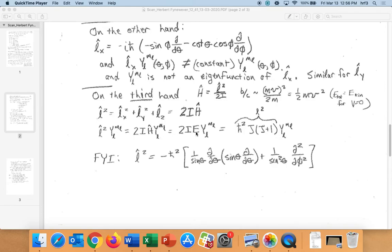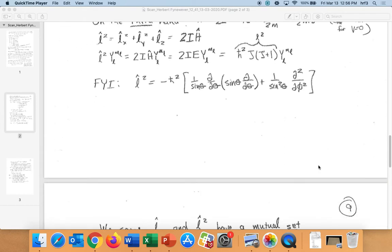So L̂² times the eigenfunction is just equal to 2I times the eigenfunction. Oh, well, we already know that we'll get the E out, right, from the original Schrödinger equation. So this would just be 2IE. So L² must be just ℏ² times j times (j+1), which we know from when we solved the Schrödinger equation before. That's kind of interesting. And just as an FYI, this is the form of L̂². Doesn't look like it would work out, but it does.